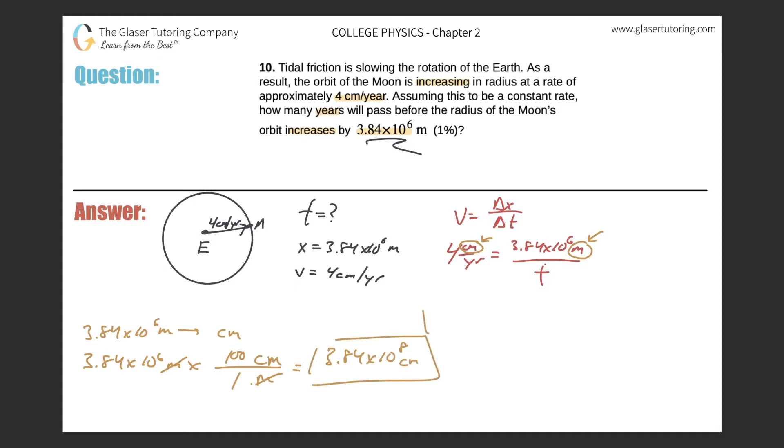So now this is the value I can plug back into my equation here. So let's continue. Now I'll have 4 centimeters per year is equal to 3.84 times 10 to the 8 centimeters over t. Now I can solve for t. Just remember when you do so, since your time value on the left-hand side is years, the time value that you will solve will be in years as well. So just don't forget that. Because what I'm going to do now is I'm just going to get rid of the units to make the calculation look easier.